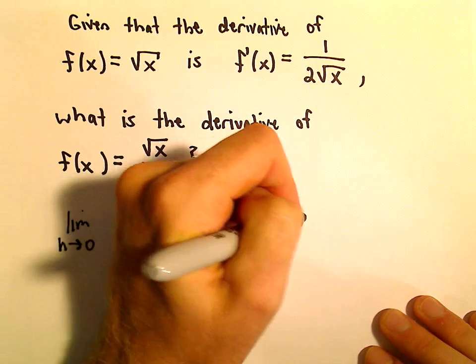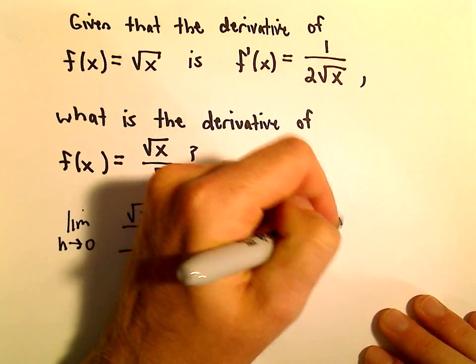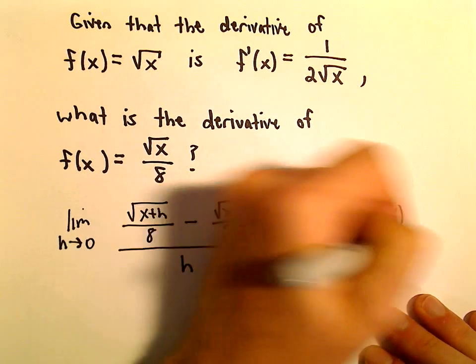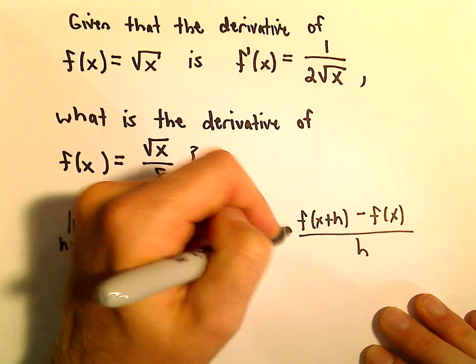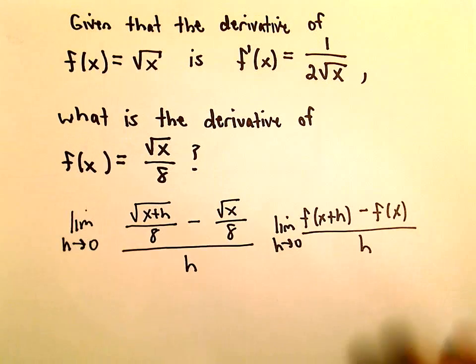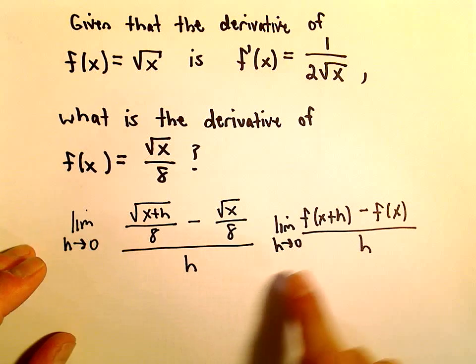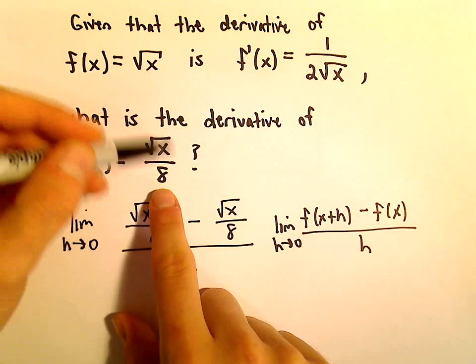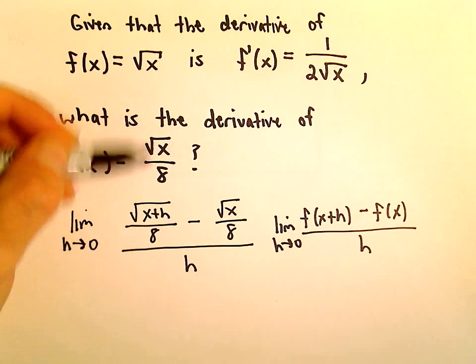So again, I'm just using our definition f of x plus h minus f of x all over h, and we're just taking the limit of that as h goes to 0. I'm just using the definition of the derivative on our new function, square root of x over 8.